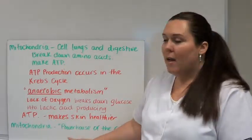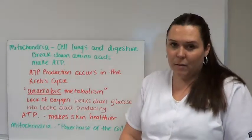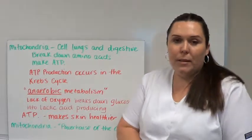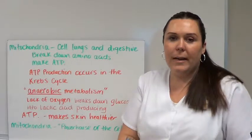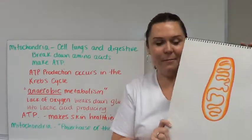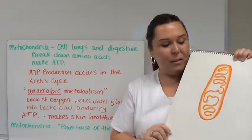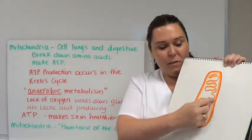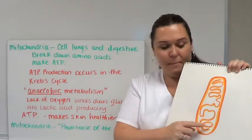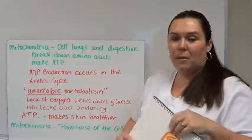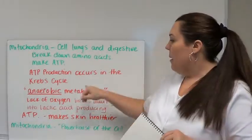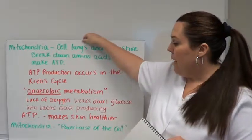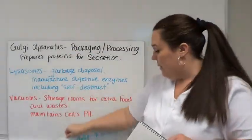Mitochondria, you can think of it as the powerhouse of the cell. A picture of that, these are very elementary pictures, but this is what it would look like. Think of it like a little jelly bean structure within the cell. It's got its own little canals and hallways through it. Remember, cells, lungs, and digestive system makes ATP. ATP is required for cell activity.